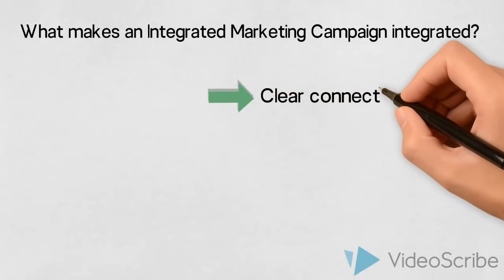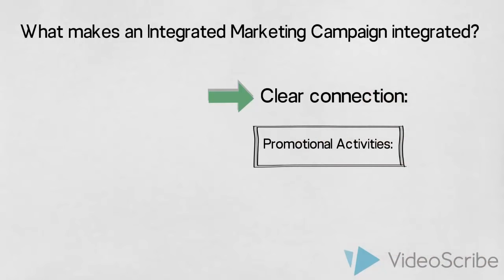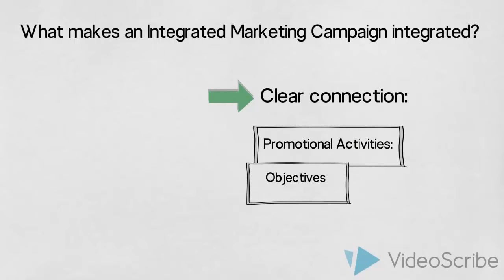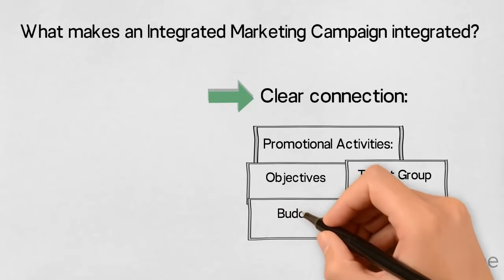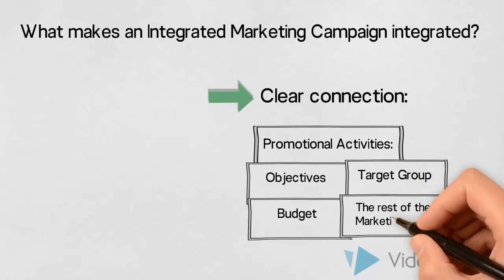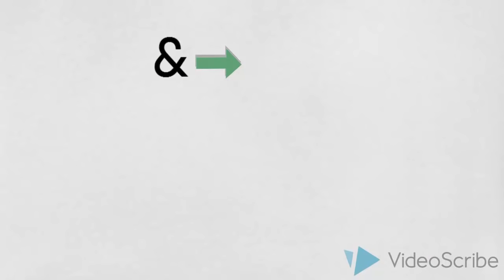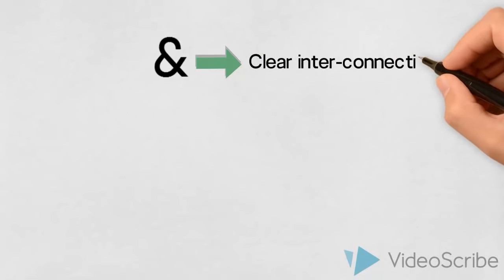So there must be a clear connection between the chosen activities and the objectives — what we want to achieve — between the chosen activities and the target group, and whether we will catch the target group in the right place with the right message. There must also be a connection between the chosen activities and the budget. And finally, we must make sure that the chosen activities, our choice of media and content, support the rest of the marketing mix. Another and perhaps the most central aspect of the integrated approach is whether the different promotional activities are interconnected — do they support each other?